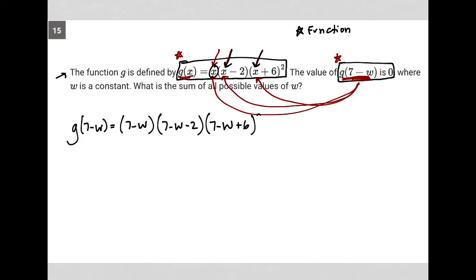Now I'm going to simplify where I can. I know g(7 - w), based upon the question, is 0, so I'm going to replace that with 0. So 0 equals (7 - w). Then 7 minus 2 is 5, so this becomes (5 - w). And 7 plus 6 is 13, so this becomes (13 - w)².